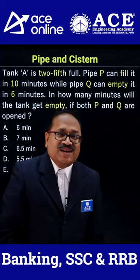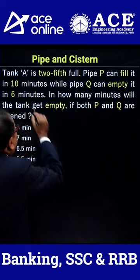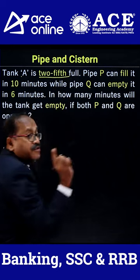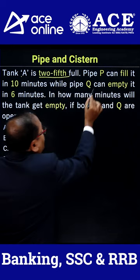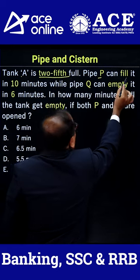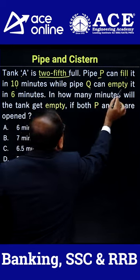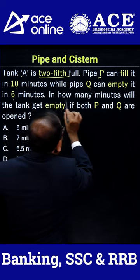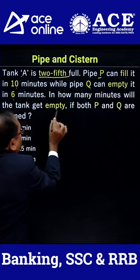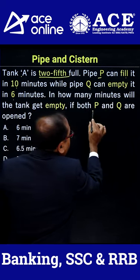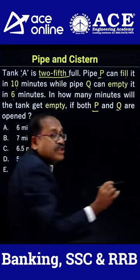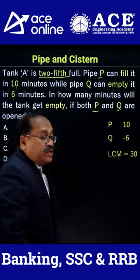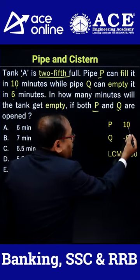Hello everyone, welcome to ACE Online Class. Let's discuss this question: the tank is 8/5 full. Pipe P can fill it in 10 minutes and pipe Q can empty it in 6 minutes. In how many minutes will the tank get empty when P and Q both are open? This is the information we have. P fills in 10 minutes, Q empties in 6 minutes.